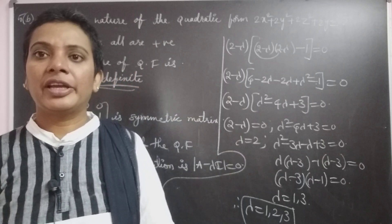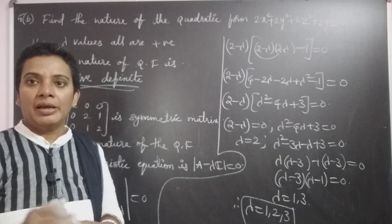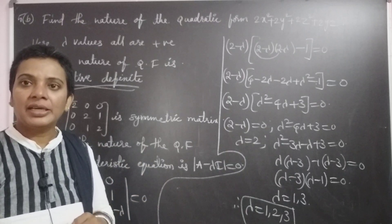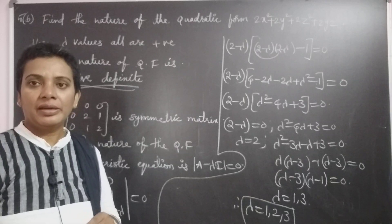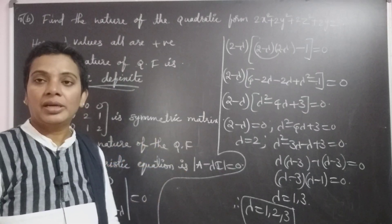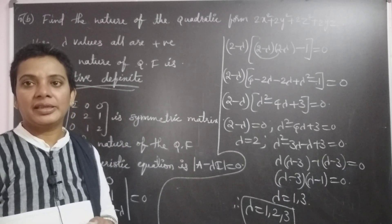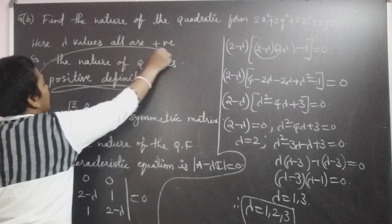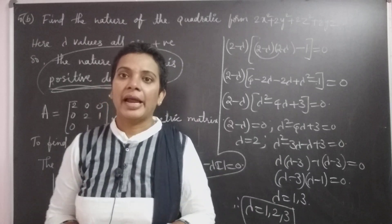This is the procedure for how we find the nature of the quadratic form. First, write the quadratic form in matrix form as X transpose AX. Then find the characteristic eigenvalues of the coefficient matrix A. Based on the eigenvalues, we determine the nature. If the eigenvalues are all positive, the quadratic form is positive definite. If you like this video, please subscribe to my channel and share it with your friends.